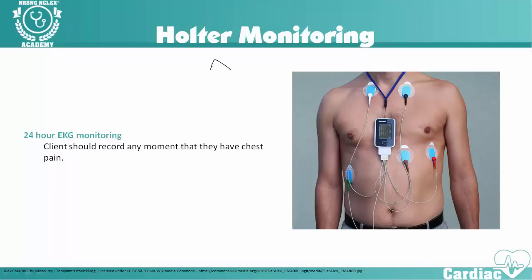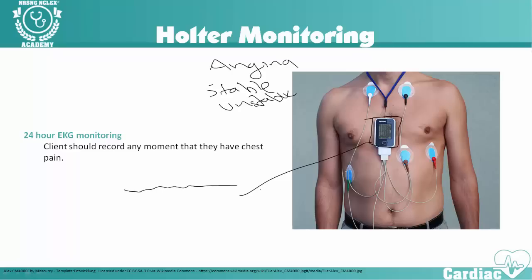Holter monitoring is important for patients who maybe have angina — whether stable, unstable, or Prinzmetal angina. As you can see here, this is a picture of a Holter monitor. It can be worn on a patient for 24 hours under their clothes, providing continuous EKG monitoring. It stores the EKG data. As the patient starts to have chest pain, they need to write down the time and what they were doing. The physician can then take that EKG printout and match it up with the patient's activities to better understand the angina and any EKG abnormalities.